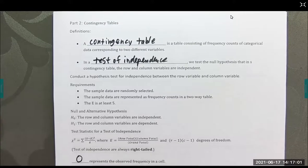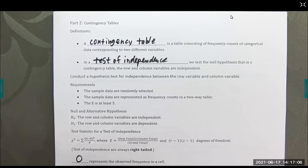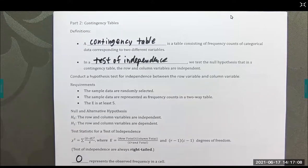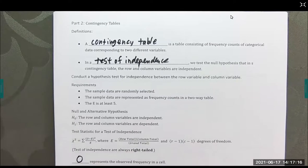O represents the observed frequency in a cell. E represents the expected frequency in a cell. Little R is the number of rows and little C is the number of columns. And let's jump into an example.